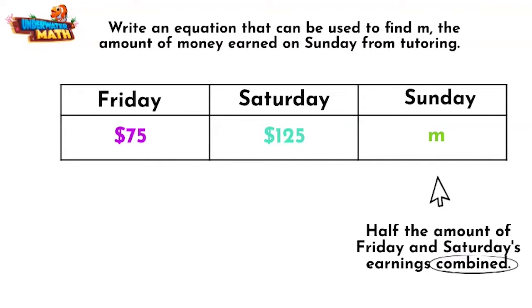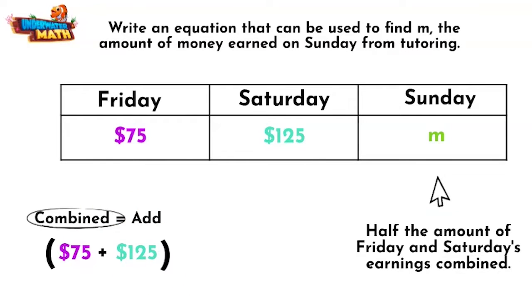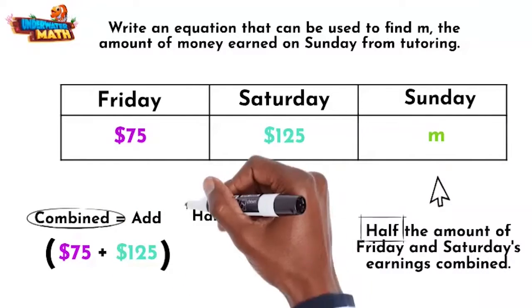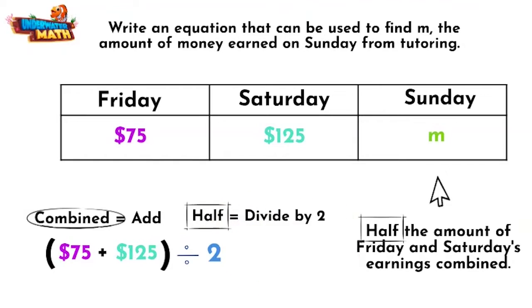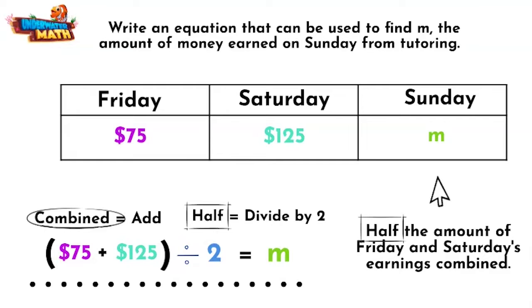To find Sunday's earnings, we need to combine Friday and Saturday's earnings, which just means we add them. And to find half that amount is the same as dividing the sum by two. And there we have it, an equation we can use to determine m, the money Josie earned on Sunday.